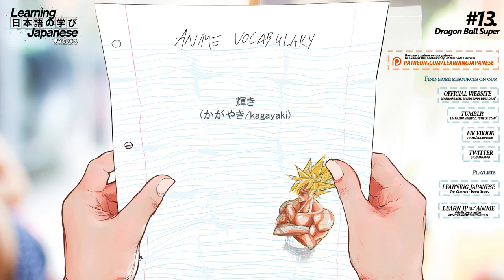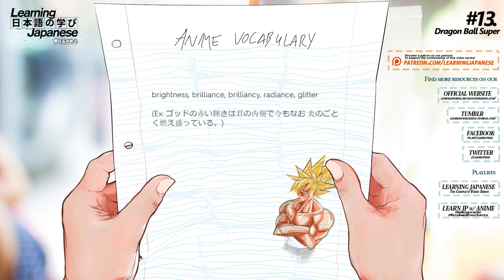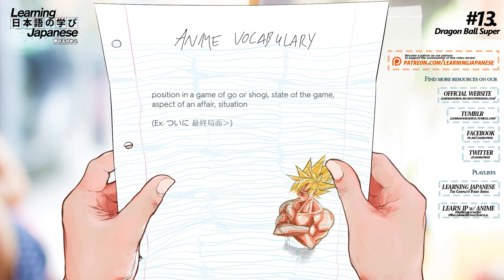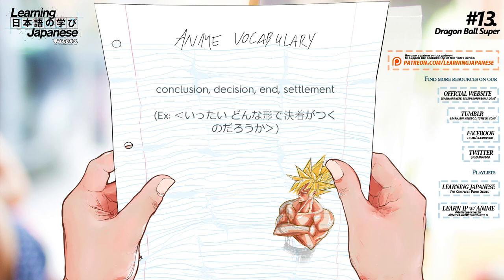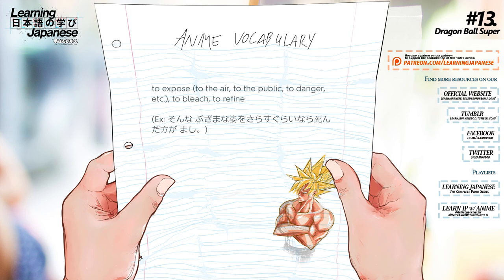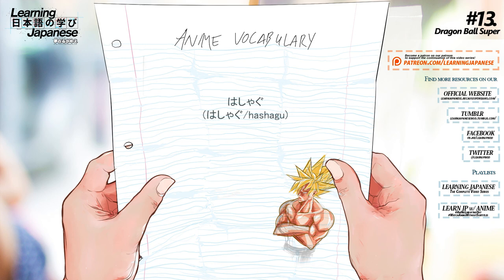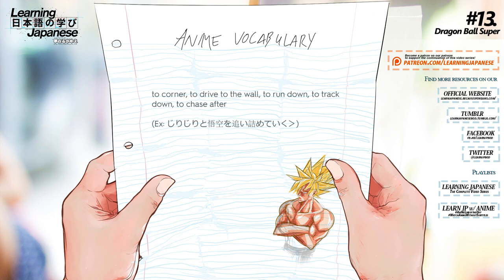輝き — Brightness, brilliance, brilliancy, radiance, glitter. 局面 — Position in a game of go or shogi, state of the game, aspect of an affair, situation. 結局 — Conclusion, decision, end, settlement. 晒す — To expose, to bleach, to refine. はしゃぐ — To make merry, to frolic, to be in high spirits. 追い詰める — To corner, to drive to the wall, to run down, to track down, to chase after.